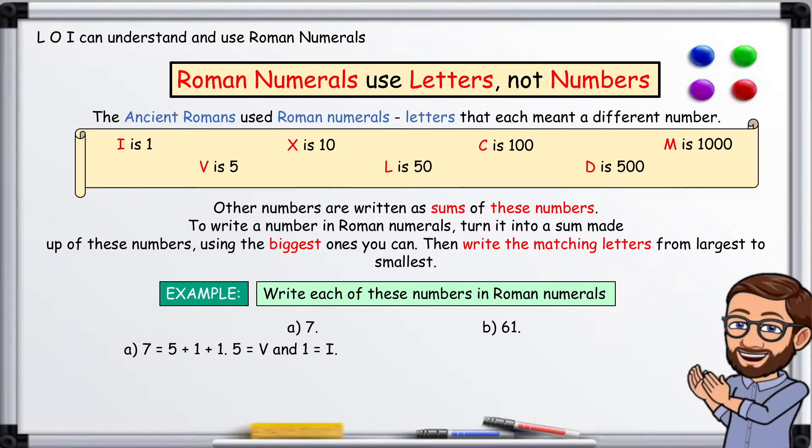A, 7 equals 5 plus 1 plus 1. 5 equals V, 1 equals I. So in Roman numerals, 7 is VII.